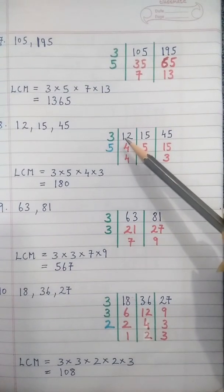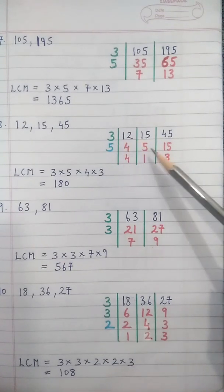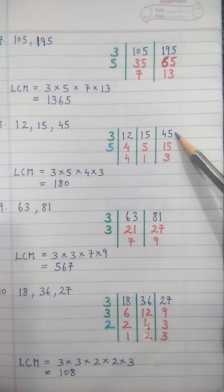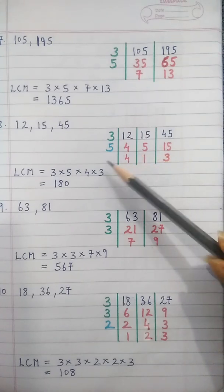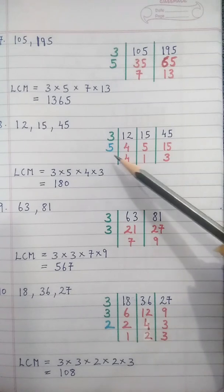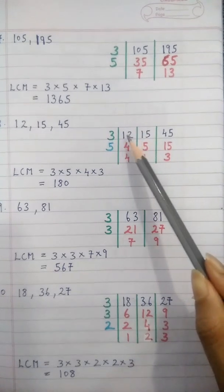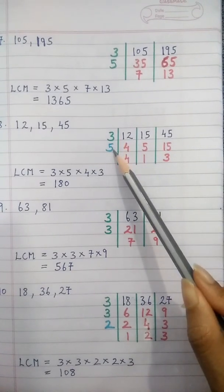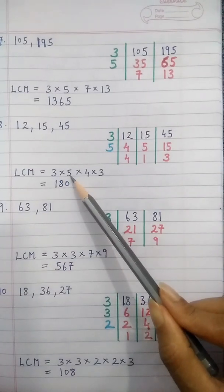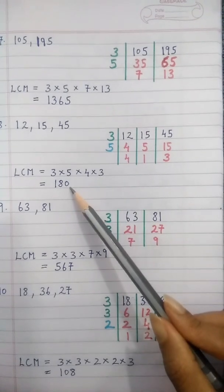Sum 8: 12, 15, and 45. Factorize by 3: 3 fours are 12, 3 fives are 15, 3 fifteens are 45. We get 4, 5, and 15. Divide 5 and 15 by 5: 4 is written as it is, 5 ones are 5, 5 threes are 15. Here 3 is a common factor of all three and 5 is a common factor of only two, but still taken as common factor for LCM. LCM = 3 into 5 into 4 into 3 = 180.